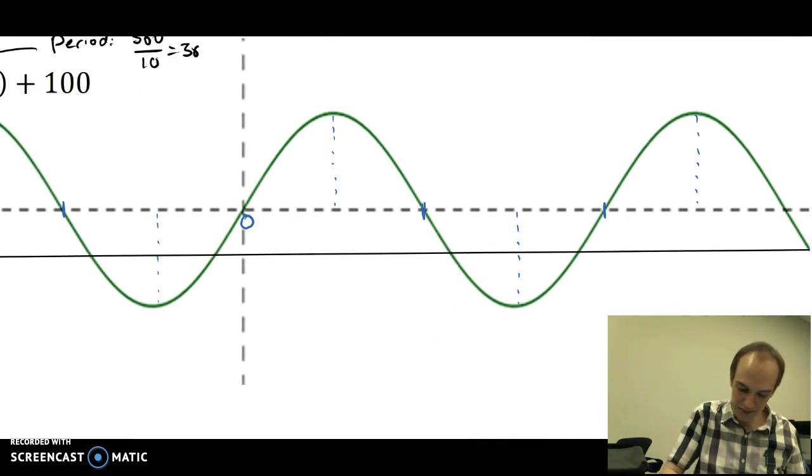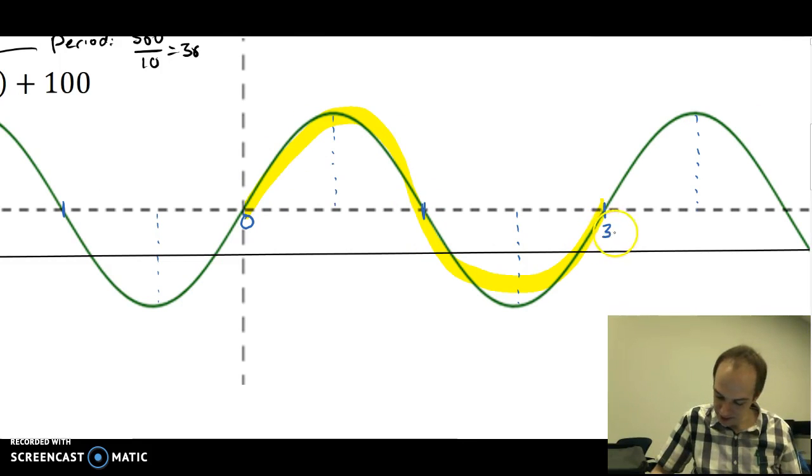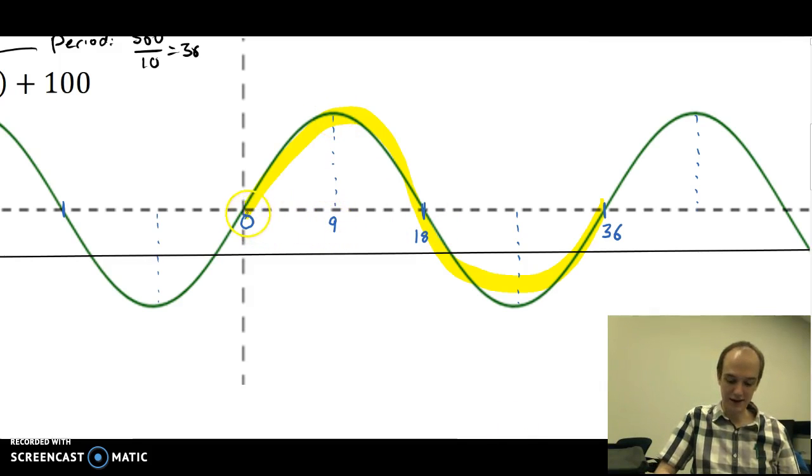So I do 360 divided by 10 and get 36. That's one full cycle of the graph is going to be 36. That means that a half cycle of the graph will take me to 18, and a half half cycle will take me to 9, and that's where the maximum will be. Then, now that I know the 9, I look at the spacing.